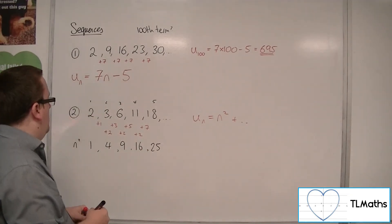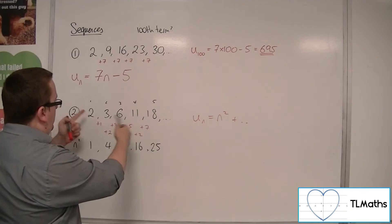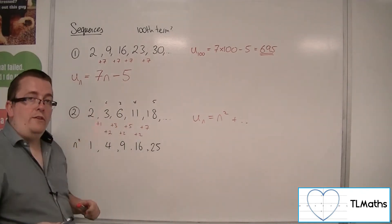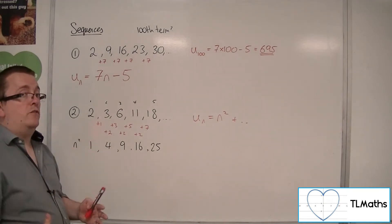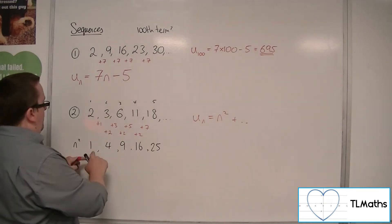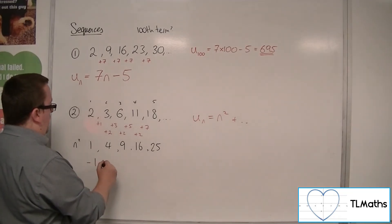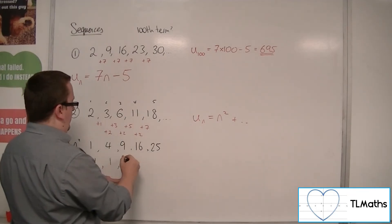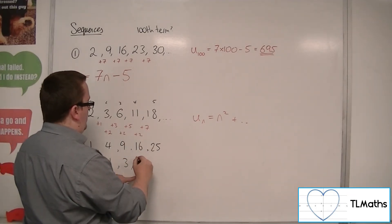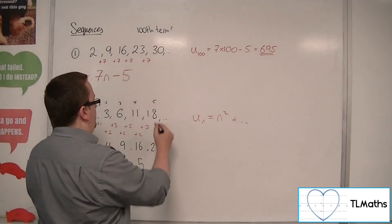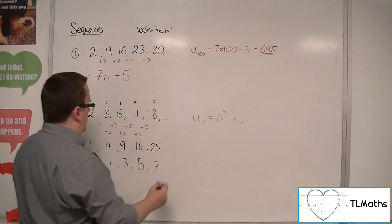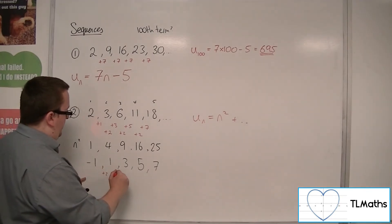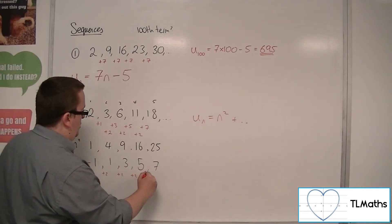And what we do is we say, whatever this is, I'm going to get this sequence and then take that one away from it and see what I've got left over. So I've got 1 take away 2 is minus 1, I've got 4 take away 3 is 1, 9 take away 6 is 3, 16 take away 11 is 5, and then 25 take away 18 is 7. So here we see that we've got a linear sequence, because we're adding 2's each time.